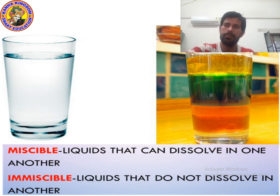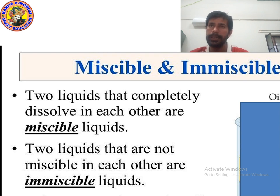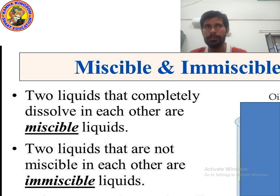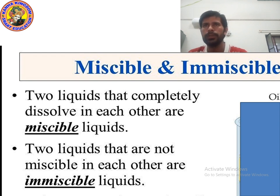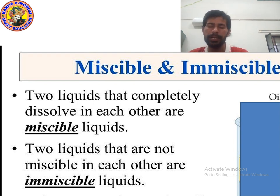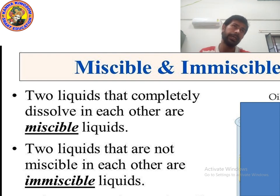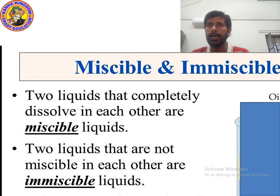Now let's go to the next point. As you can see the definition, I have written it in a different language — miscible and immiscible. You can write either this definition or the one from the previous slide. Check the spelling of miscible: M-I-S-C-I-B-L-E, and immiscible: I-M-M-I-S-C-I-B-L-E.